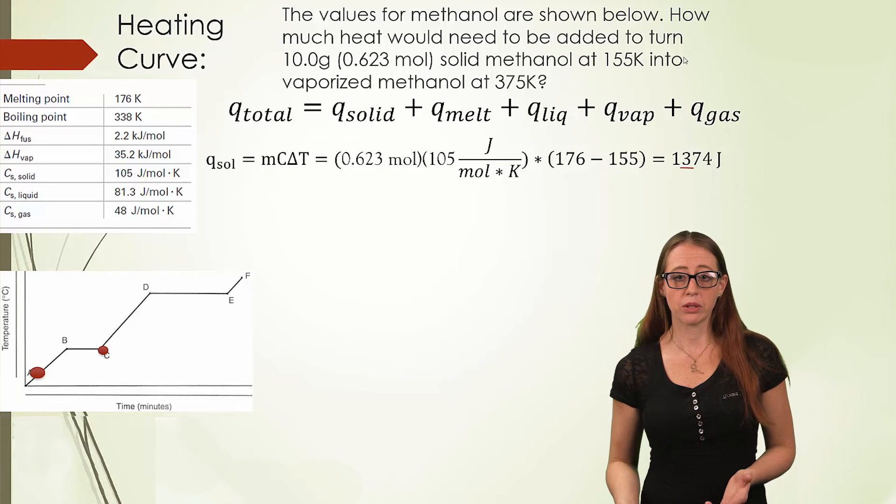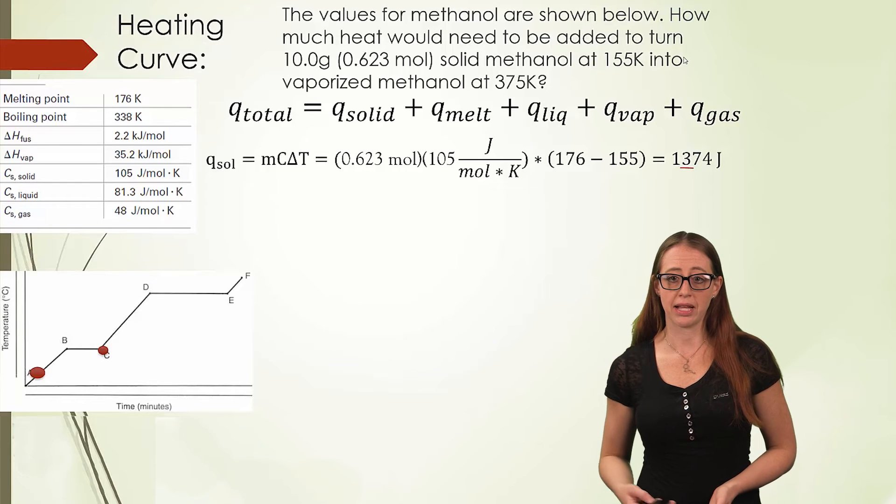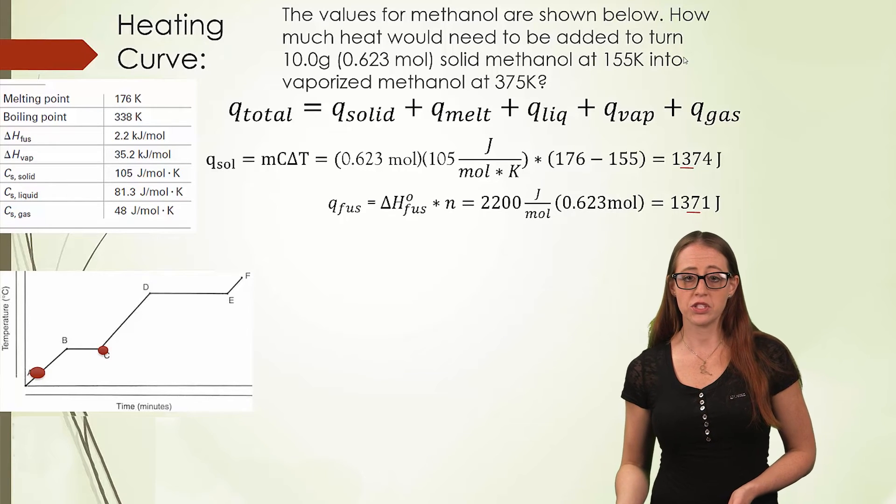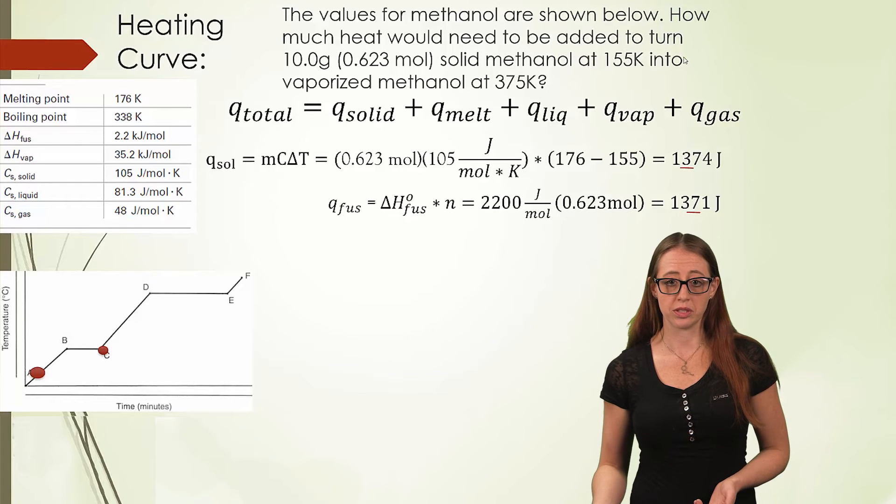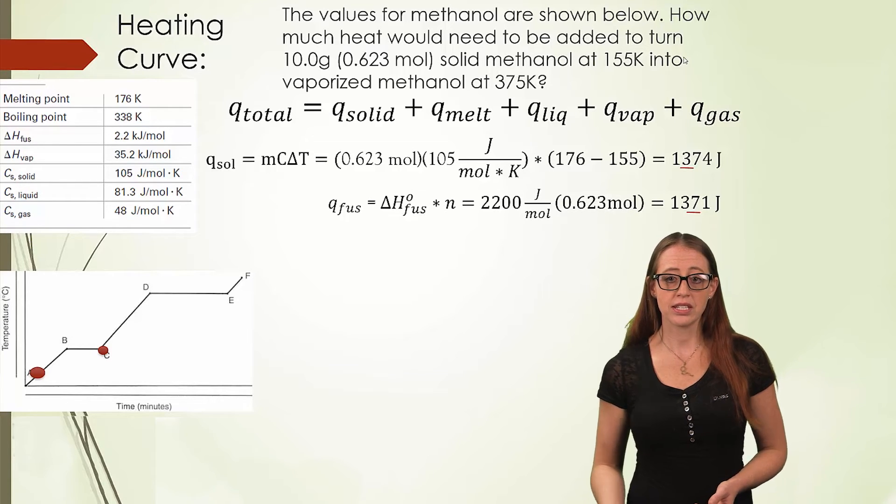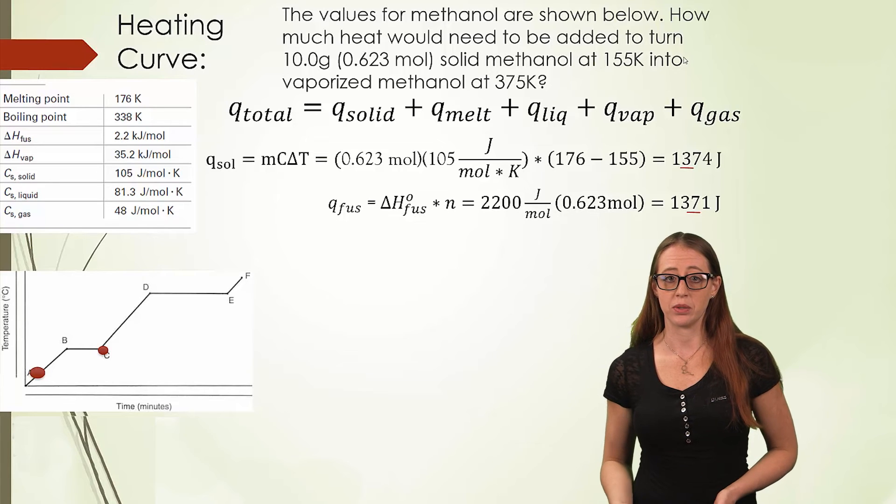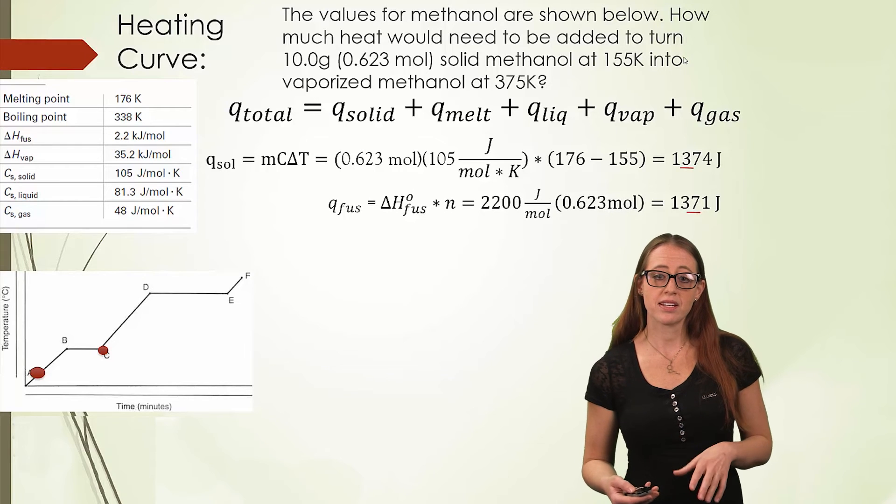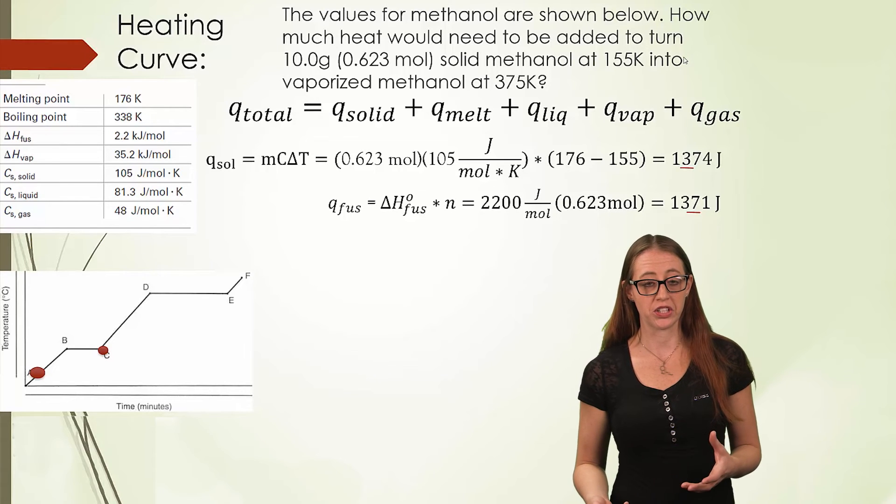To melt the sample requires moles multiplied by the given heat of fusion, or in this case, the 2200 joules per mole, multiplied by the 0.623 moles, to give us 1371 joules. Notice that I'm keeping track of sig figs with underlines.